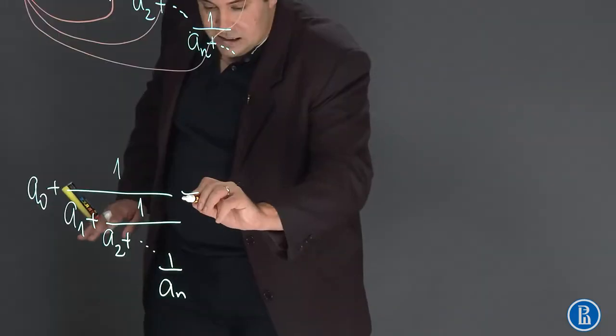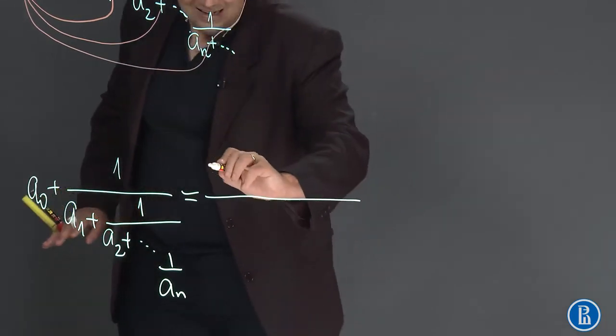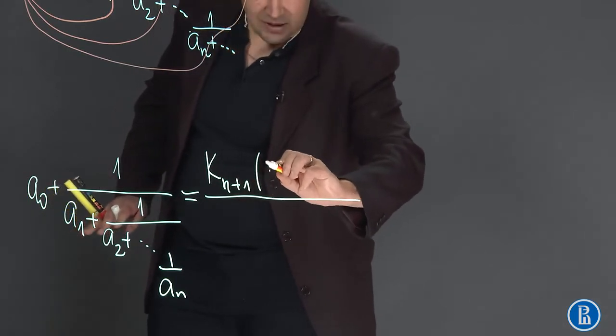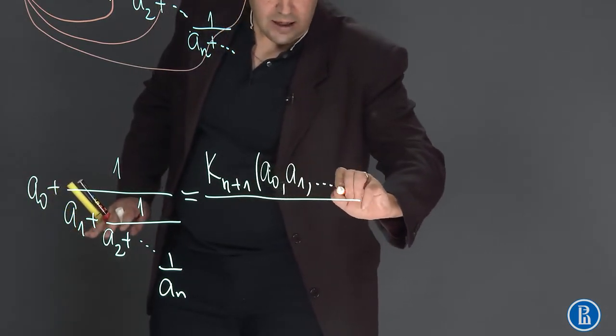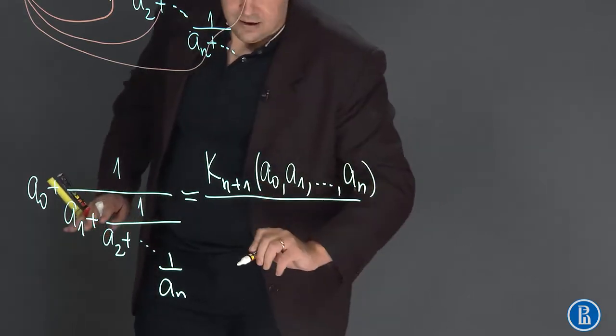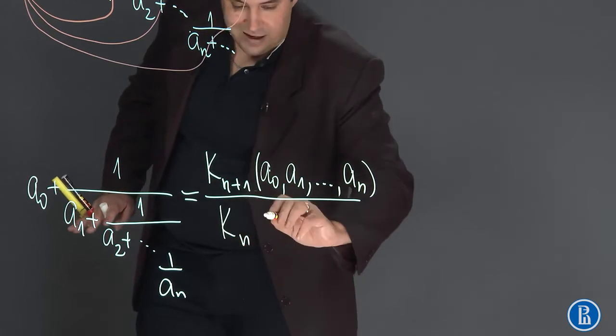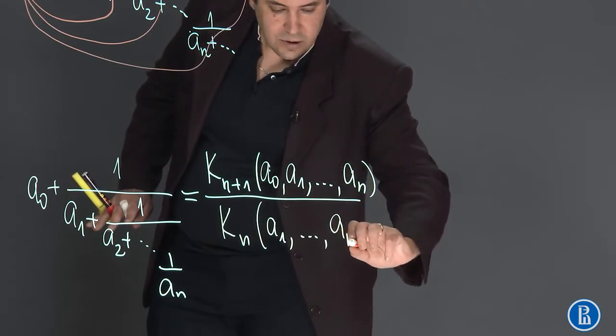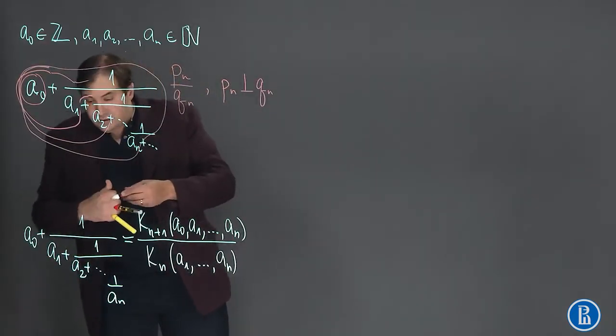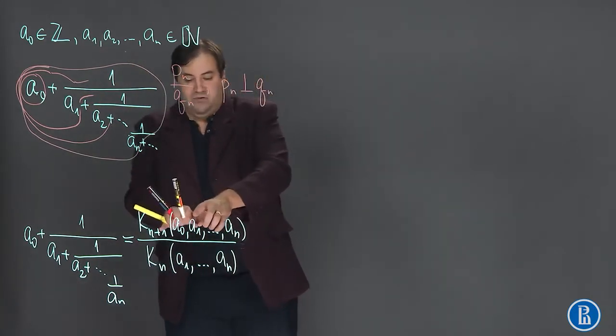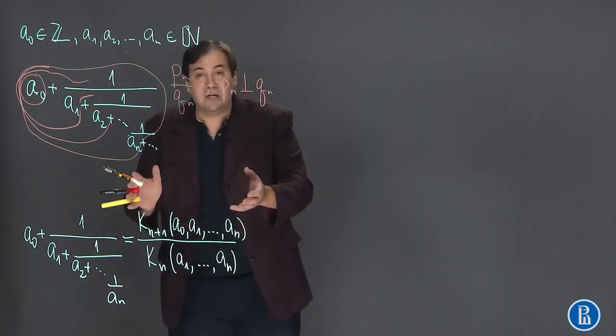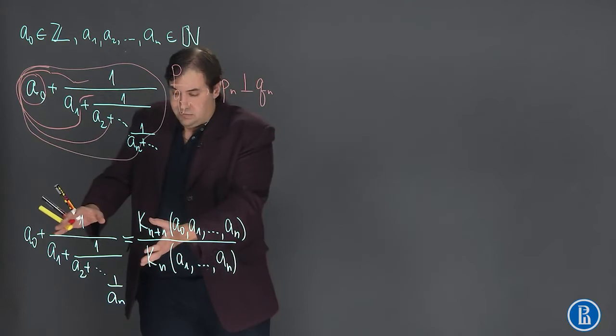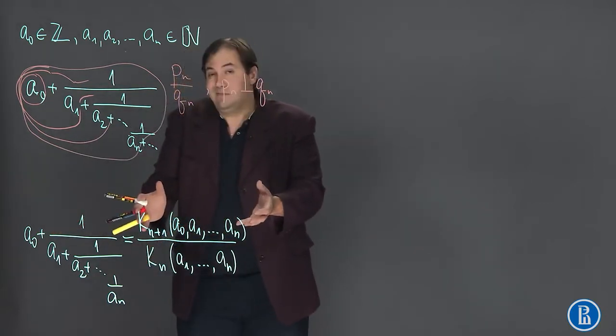So finite Continued Fraction is equal to Continuant of order n plus 1 of elements a0, a1 and so on a_n over Continuant of order n of a1 to a_n. When we substitute variables in Continuants by numbers, we obtain an integer number.